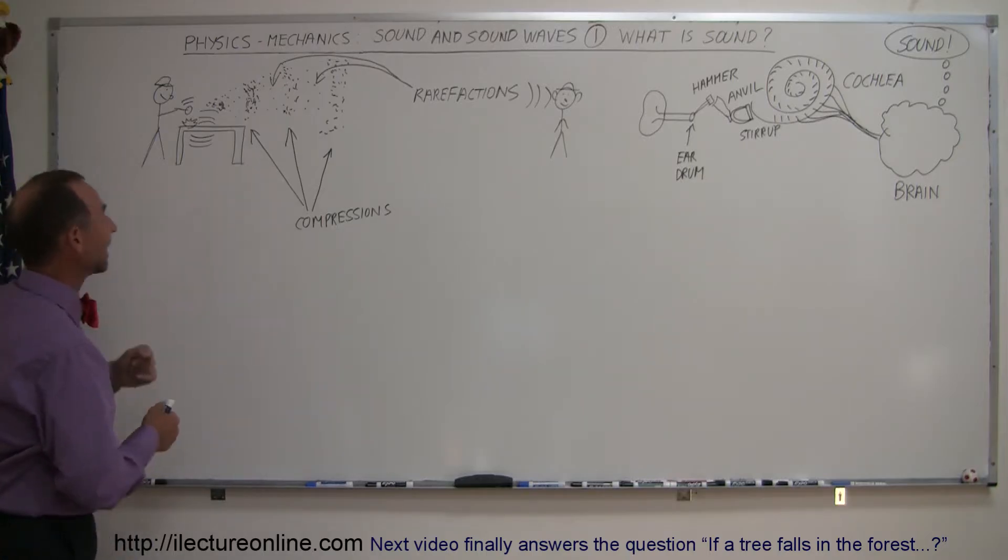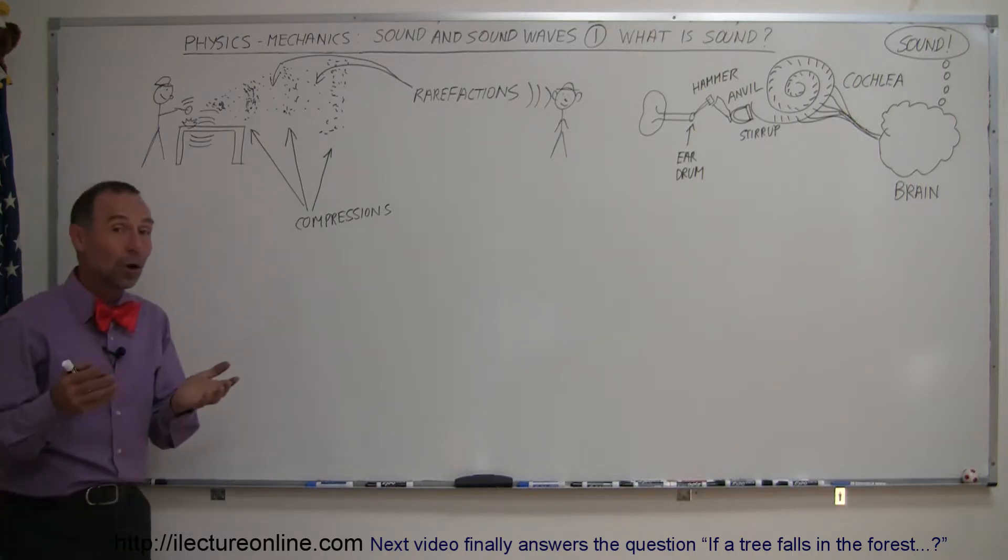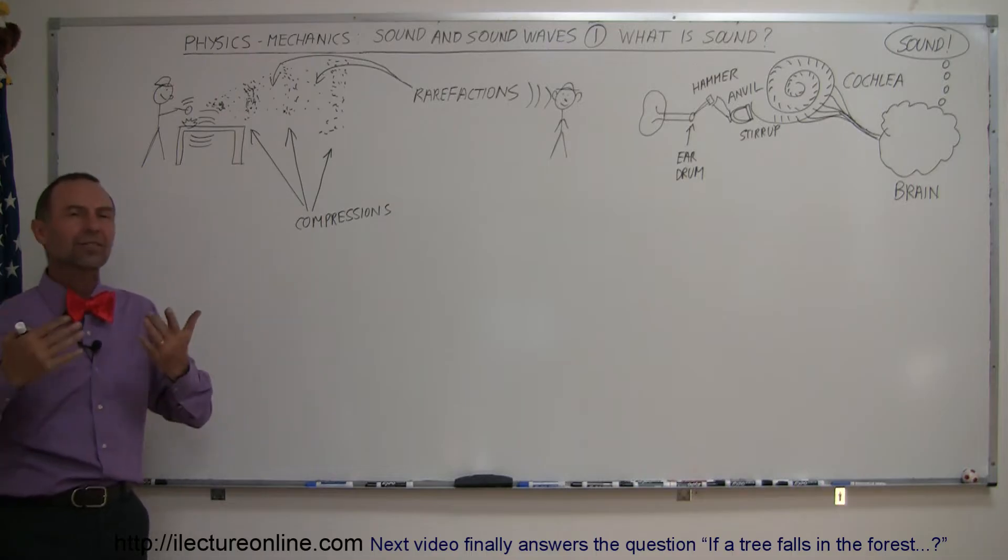So let's say we have a person here that has a hammer in their hand and they hit the table. Now you know that when you see somebody hit a table, hit a drum, you hear a sound. Well, how does that work?